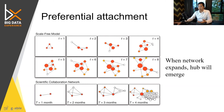The next node coming in is still randomly picking the node that has high probability. This is a random process. As this time step proceeds, you can clearly see that the hub would emerge — these two hubs would emerge.